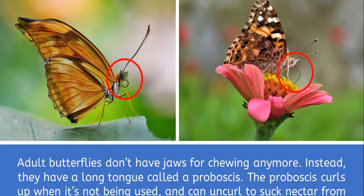Interestingly, adult butterflies don't have jaws for chewing — they get rid of their jaws. Caterpillars eat leaves, but butterflies actually drink nectar. They have a long tongue that actually rolls up.